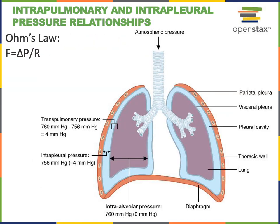So when the thoracic volume increases, the pressure inside of the lungs decreases.